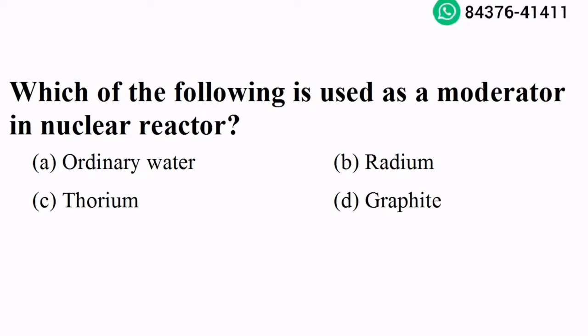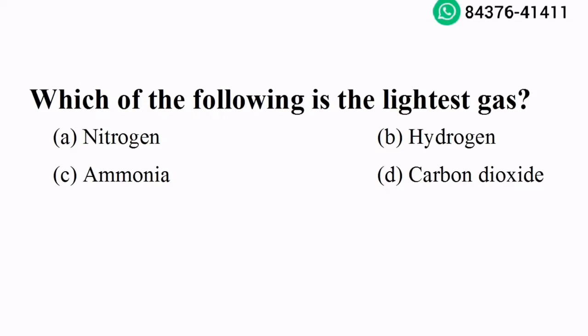Which of the following is used as a moderator in a nuclear reactor? Graphite. Option D is the right answer. Which of the following is the lightest gas? Hydrogen.